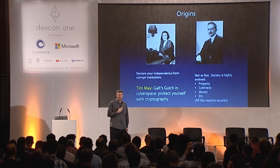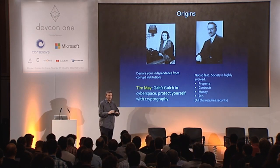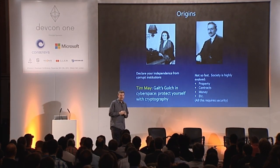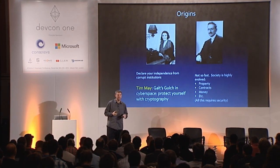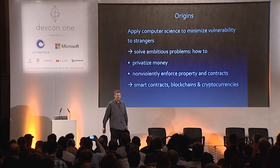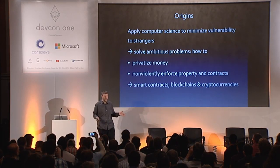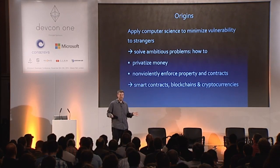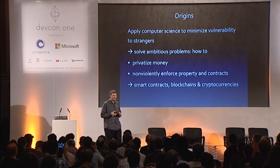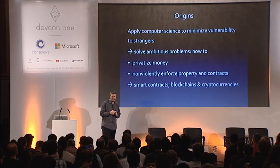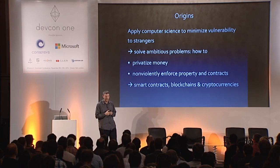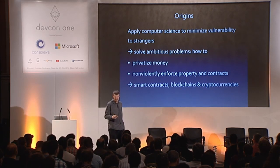Frederick Hayek, another big influence on us, had studied the basis — the protocol layer underlying society, underlying free markets, which we champion. Property, contracts — if you go to law school you'll study these in your first year. And all that requires security. So we wanted to apply computer science, take advantage of Moore's law, to minimize vulnerability of strangers and maximize security, and in doing so solve ambitious problems of the Hayekian nature, such as privatized money and non-violently enforced property and contracts. That is the milieu where ideas like smart contracts, the first blockchain designs, and the first cryptocurrency designs came out of.